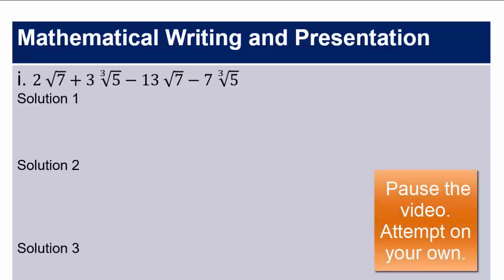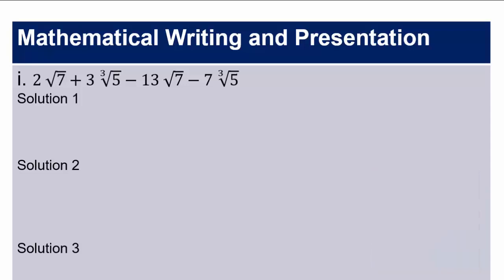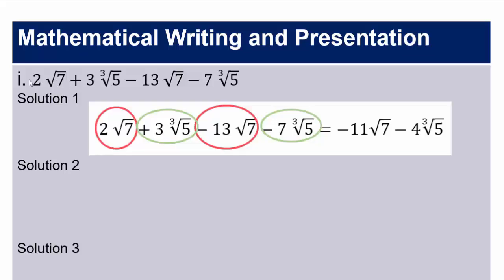Pause the video and try this problem on your own. The red boxes represent 2√7 minus 13√7, which gives negative 11√7. The green represents the cube root of 5 terms: 3∛5 minus 7∛5 gives negative 4∛5.